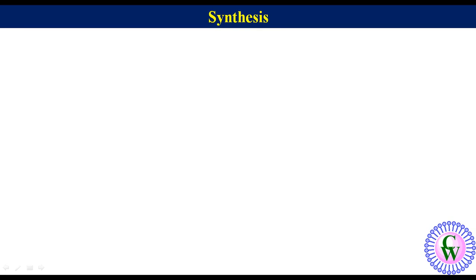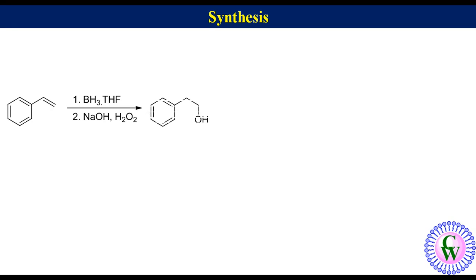Now, come to the synthesis. Styrene after hydroboration-oxidation gives phenyl ethyl alcohol, which after controlled oxidation with PCC gives phenyl acetaldehyde.